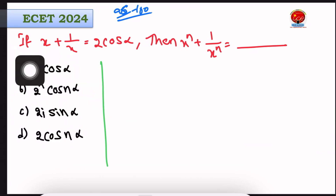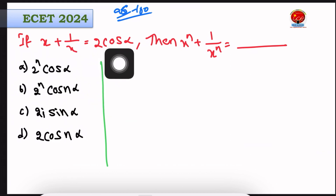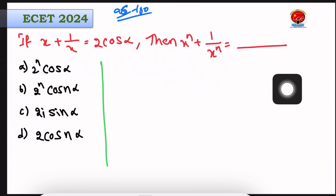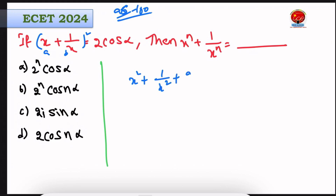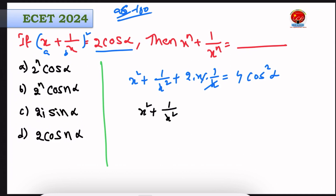First question: if x plus 1 by x is equal to 2 cos alpha, then find x power n plus 1 by x power n. We will square both sides using the formula a squared plus b squared plus 2ab. So x squared plus 1 by x squared plus 2 is equal to 4 cos squared alpha.